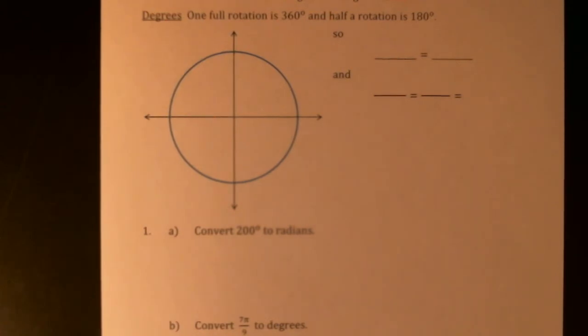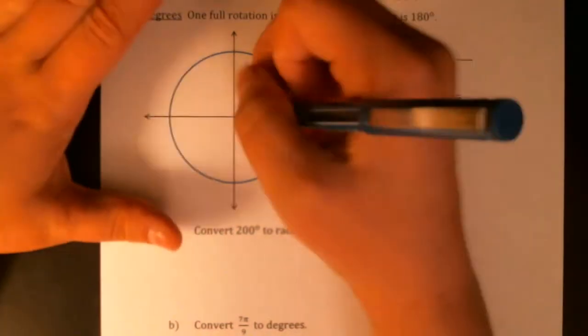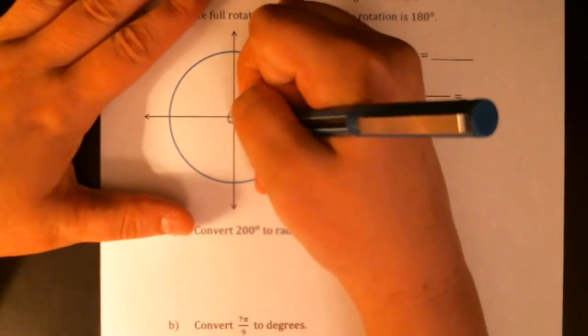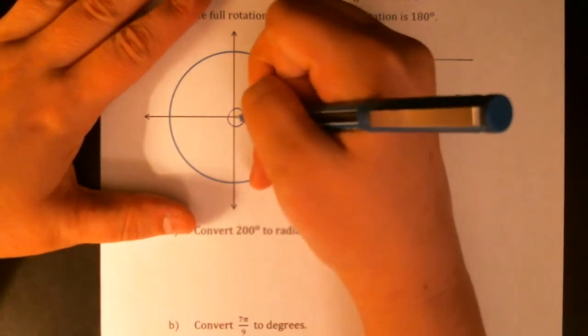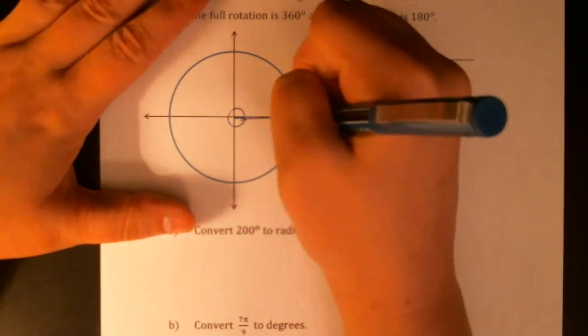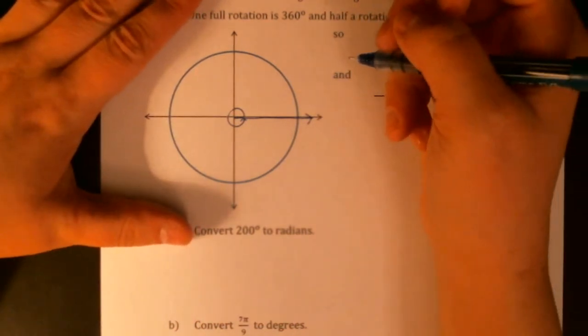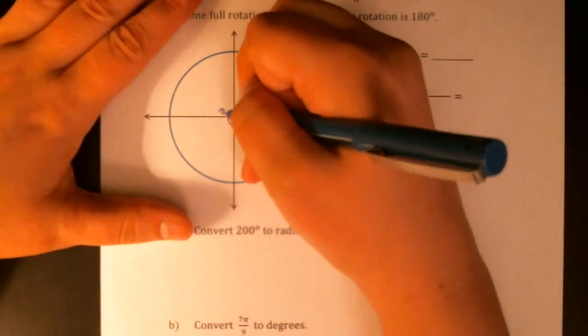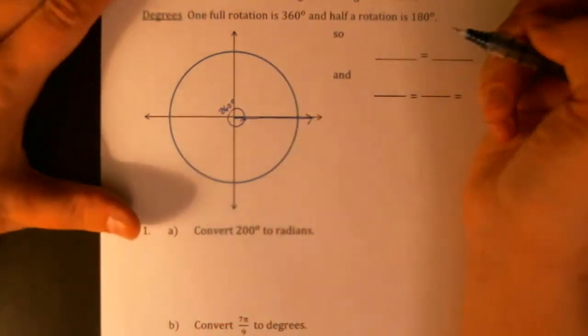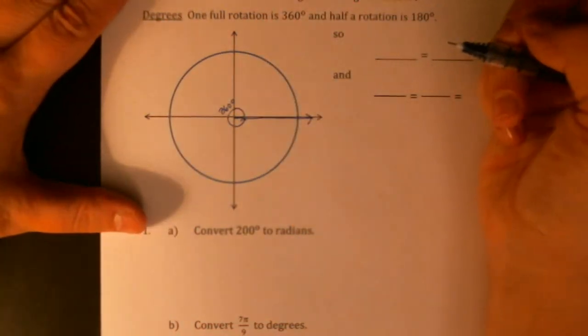I think that a great place to start with degrees is the same place we started with radians. If we rotate all the way around so our terminal side lands back on that positive x-axis, that's a 360 degree angle.